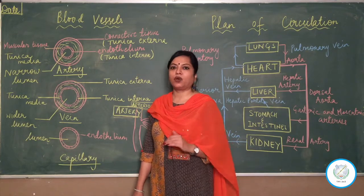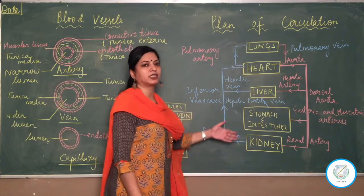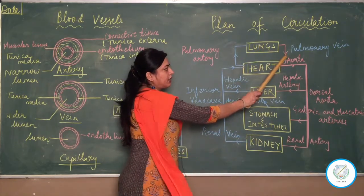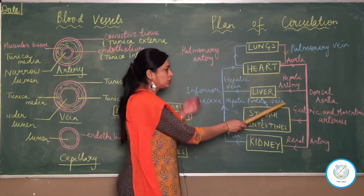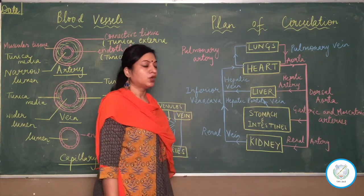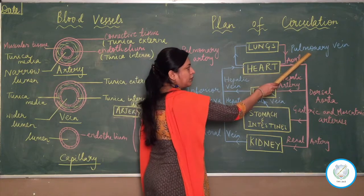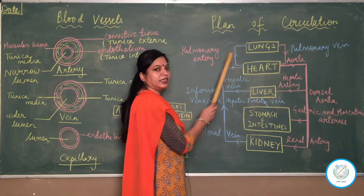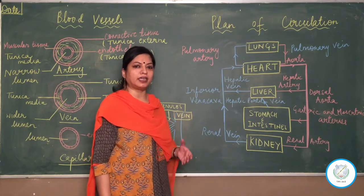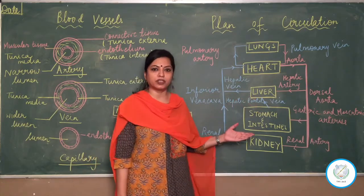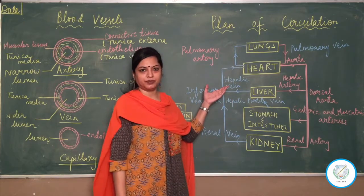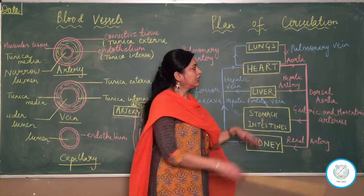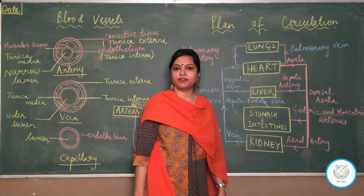Veins carry deoxygenated blood away from organs and towards the heart. If you see this plan of circulation, arteries are shown in red, carrying blood away from the heart into the organ — oxygenated blood. However, as we have spoken about earlier, the pulmonary vein carries oxygenated blood but the pulmonary artery carries deoxygenated blood. So arteries carry oxygenated blood away from heart towards the organ, except for pulmonary artery, and likewise veins carry deoxygenated blood away from organs towards the heart, except for pulmonary vein.